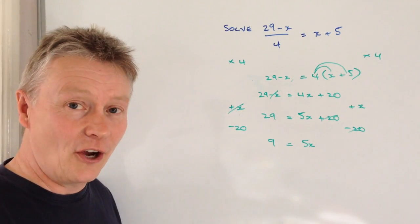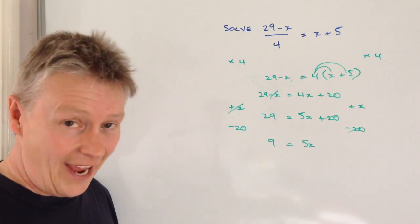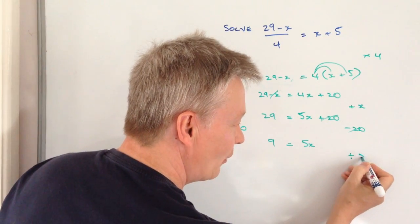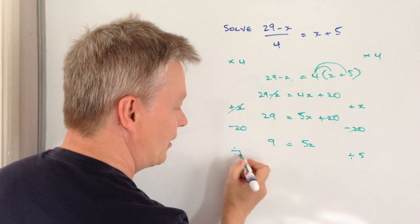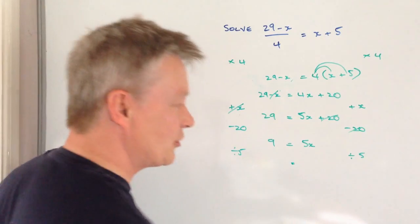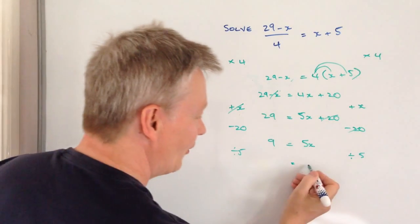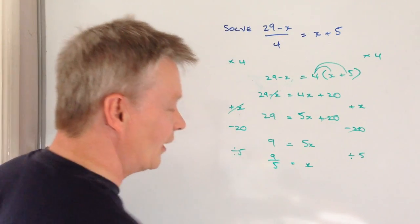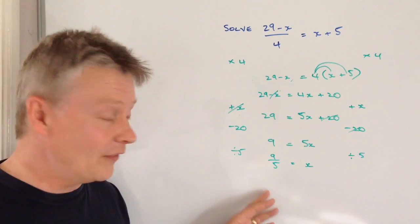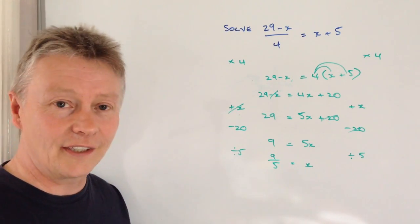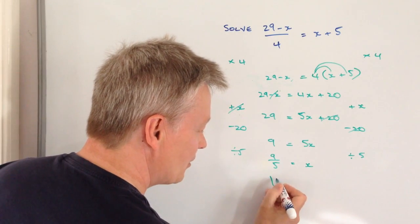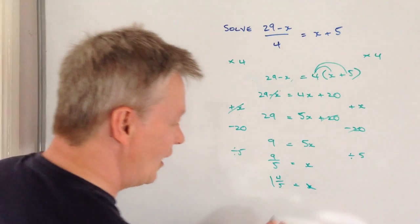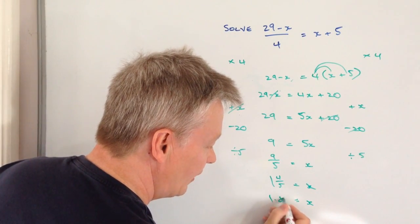So 9 equals 5x. It's really just a case of finding the value of 1x. I've got 5 lots of x, so I'm going to divide through by 5. 5 divided by 5 equals just 1x, so that's x on its own. And then I've got 9 divided by 5. I can write that as the fraction 9 over 5, as a mixed number 1 and 4 fifths, or as a decimal: x equals 1.8.